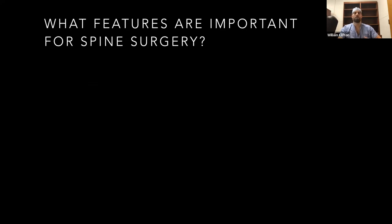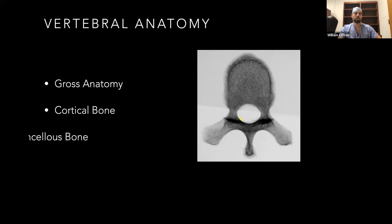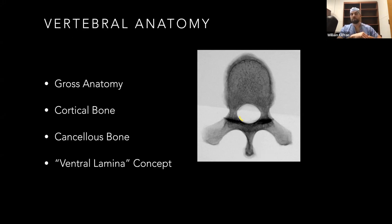What features are important for spine surgery in a simulation? First is vertebral anatomy — the gross anatomy and morphology of the vertebral body, broken down into cortical and cancellous bone structures. And then there's also the ventral lamina concept. Those well versed in freehand pedicle screws know you can actually palpate the ventral lamina while putting in your probe to know if you're about to have a breach or getting close to the spinal canal. As Larry wrote, that ventral lamina is actually a few times thicker than the lateral aspect of the pedicle wall.